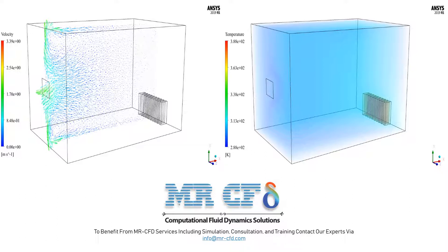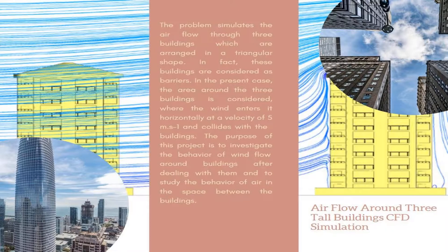Inside the room, an aluminium radiator is used as a heat source. A window is placed on one of the lateral walls for the outlet airflow. The boundary condition of the pressure outlet with pressure equal to the ambient pressure and the backflow air temperature equal to the room temperature is used. The purpose of this study is to investigate the airflow behavior and heat transfer in the room.